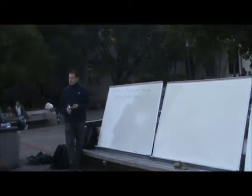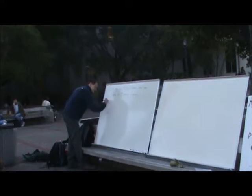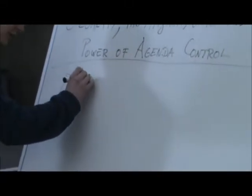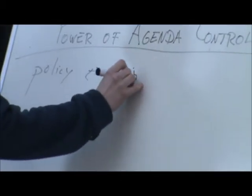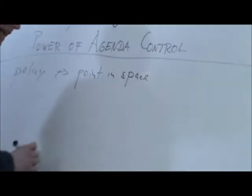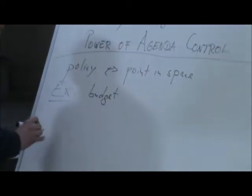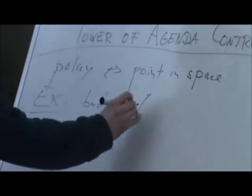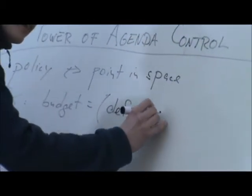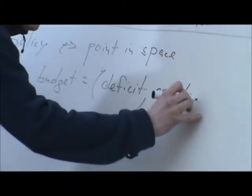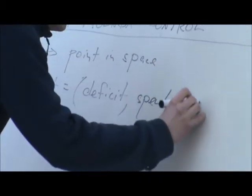For example, budget decisions can be represented by public expenditure, public revenue, taxes that the state earns, and the deficit. Policy corresponds to a point in space, and the running example we're going to use is the budget, which I'm going to view as being represented by a deficit, public spending, public expenditure, and the tax revenue.